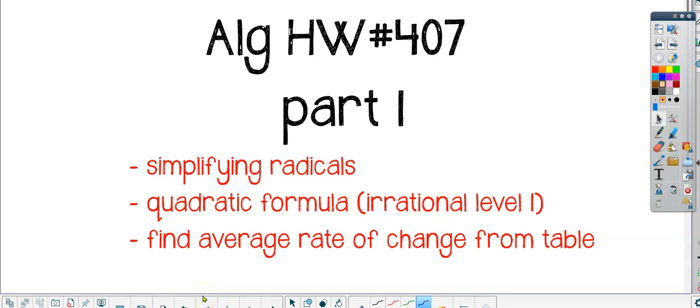Homework number 407, part 1. We will cover simplifying radicals, the quadratic formula, and finding average rate of change from a table.